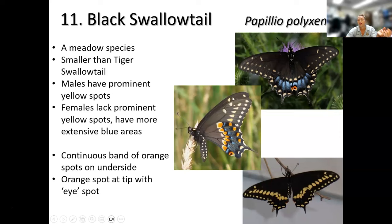The black swallowtail is the one that eats parsley — it has orange spots on the inner part of the wing and on the outer part too. They're medium-sized, and when they're flying around with wings open you can usually see a yellow line on each wing.